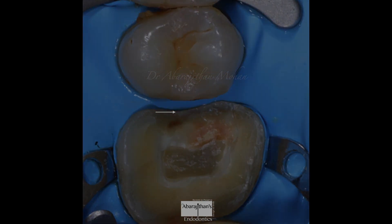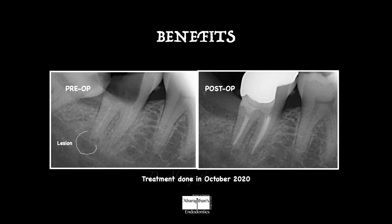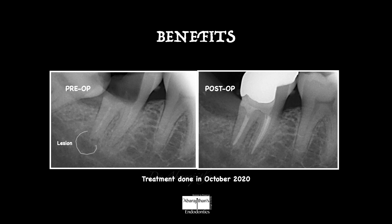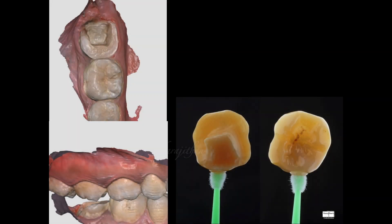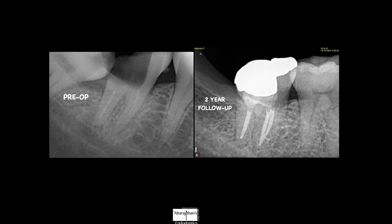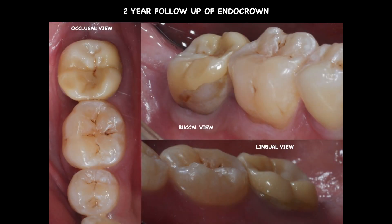Deep margin elevation is performed in cases that are very difficult to restore — like this particular scenario where there is a very challenging deep subgingival class 2 caused by an impacted third molar. Following the disimpaction, we elevated the margins using composite, and then the margins of the restoration are placed supragingivally. Impressions are then made which give a predictable, bondable scenario. This is a particular case with a two-year follow-up — you can see the deep margins elevated with composite are pretty intact even after two years.